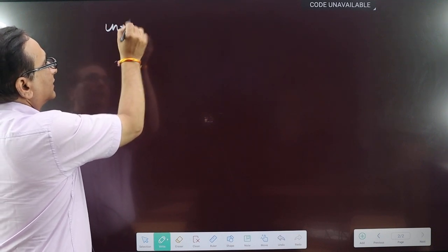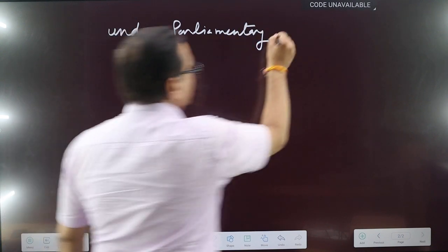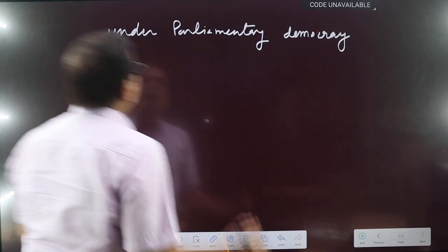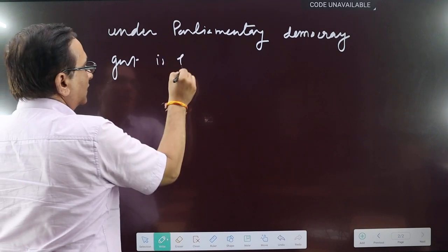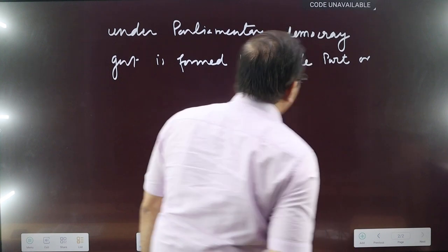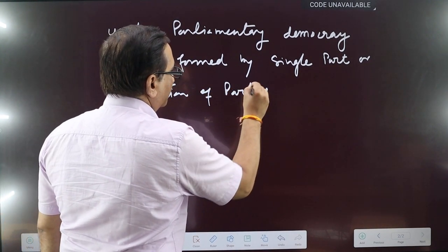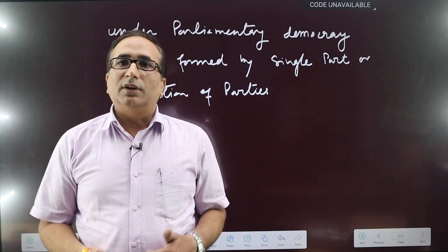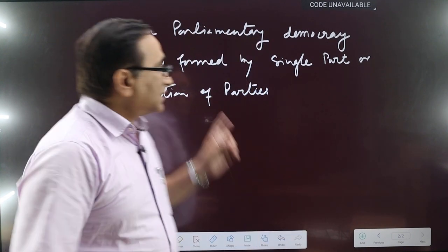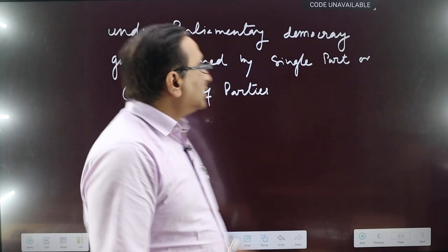Now, what are the features of government formed in Parliamentary Democracy? Under Parliamentary Democracy, the government is formed by a single party or coalition of parties. When a single party enjoys majority in the lower house of Parliament, then that single party will form the government. If a single party does not have the majority, then there will be a coalition government. So this is the first feature.